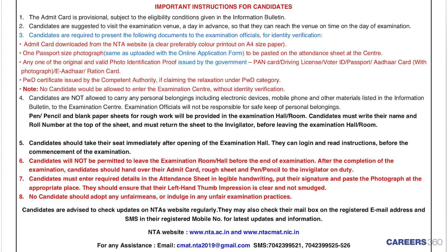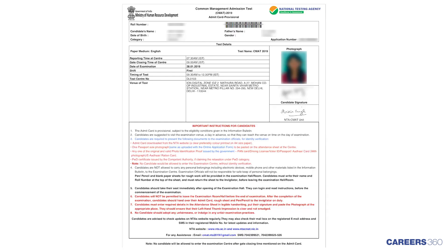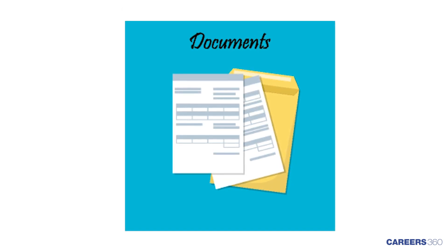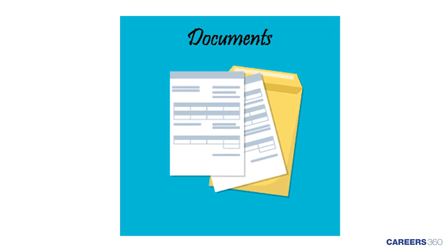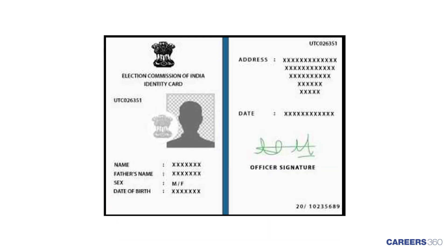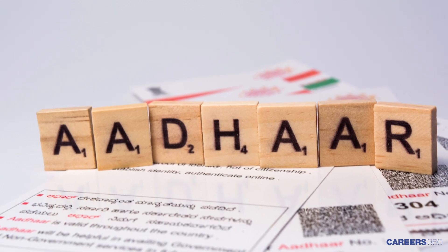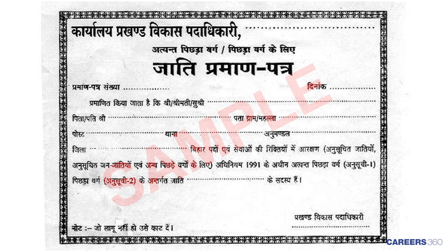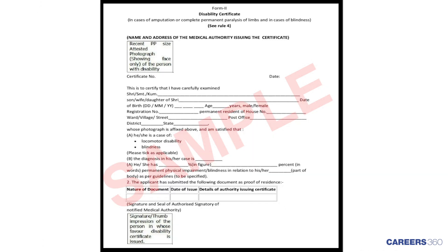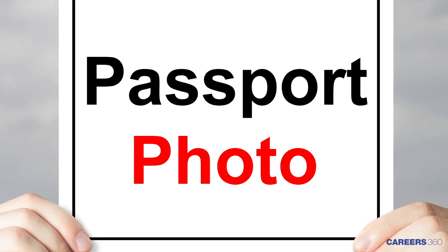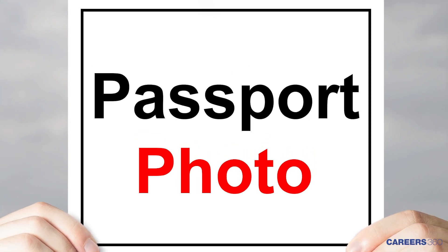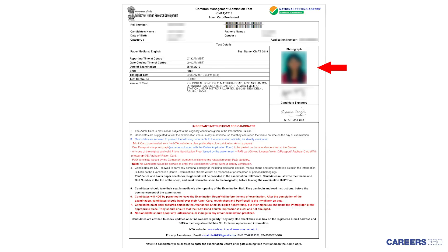What are the other documents to be carried in addition to CMAT Admit Card 2019? Along with the Admit Card of CMAT 2019, prospective test takers will have to carry one of the following necessary ID proofs: Voter ID card, PAN card, driving license, passport, Aadhaar card with photograph, valid CAST certificate for SC/ST category applicants, PWD certificate if applicable. Candidates also need to carry one passport size photograph, same as uploaded in the application form, to be pasted on the attendance sheet at the center.